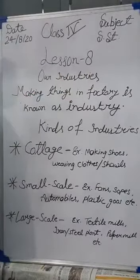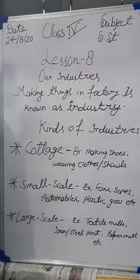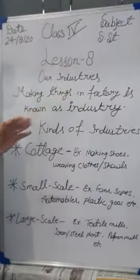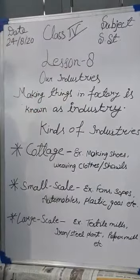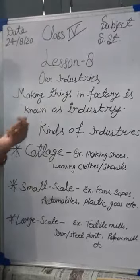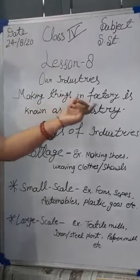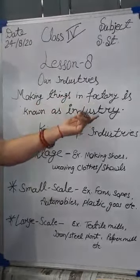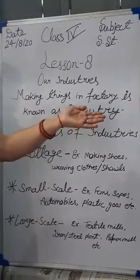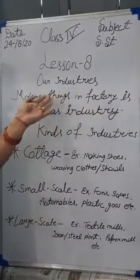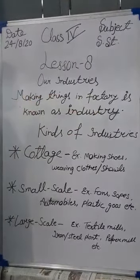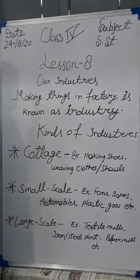What are industries? Making things in a factory is known as industry. In short, you can say factories and industries are the same things. So making things in factories is known as industry.